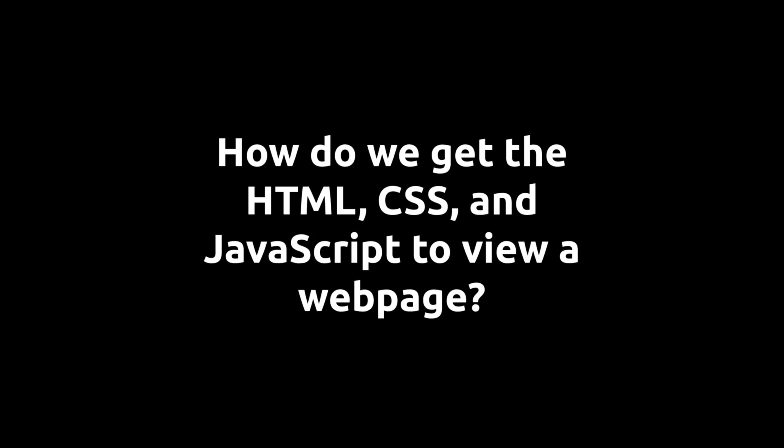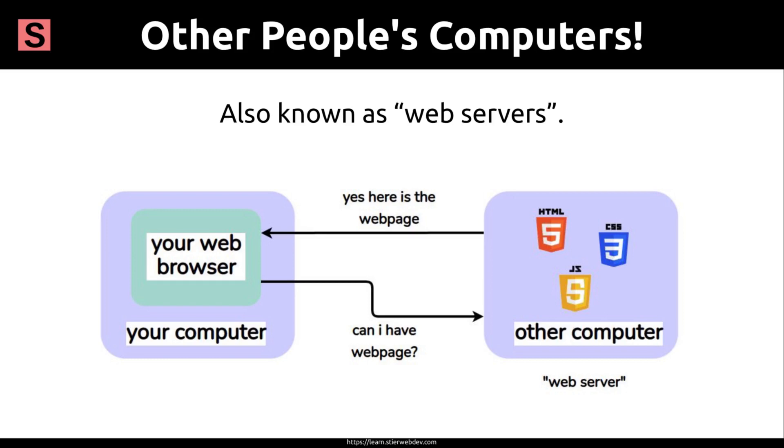But where does the HTML, CSS, and JavaScript come from? It's not like we have to download TikTok or Facebook desktop applications to use them. Well, you could go to the iPhone or Android app store and download the apps, but you don't have to do that for those websites to work. We could just type in Facebook.com in our web browser and it magically works. Why is that? Well, we actually are downloading them every single time we go to Facebook.com or TikTok.com. These web pages are coming from other people's computers.